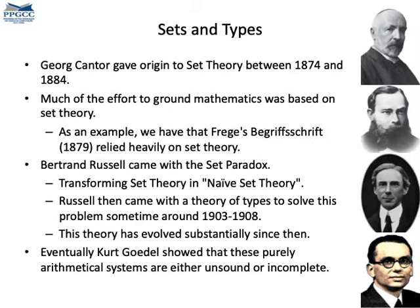Here you have a very brief timeline of key events that led to a general theory of types and to key results in undecidability. You can stop and read some of those items if you want.